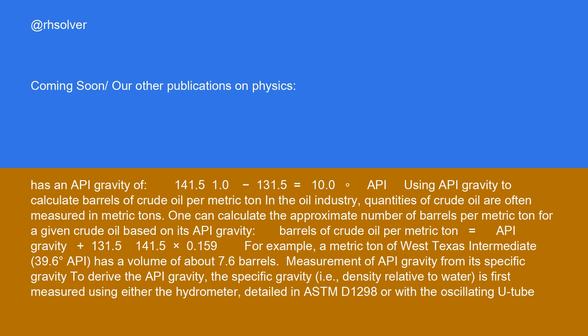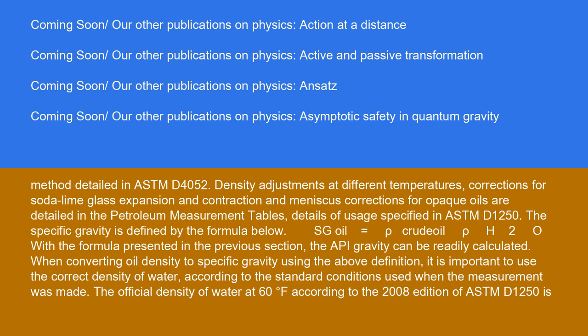Measurement of API gravity from its specific gravity. To derive the API gravity, the specific gravity, i.e. density relative to water, is first measured using either the hydrometer, detailed in ASTM D1298, or with the oscillating tube method detailed in ASTM D4052.